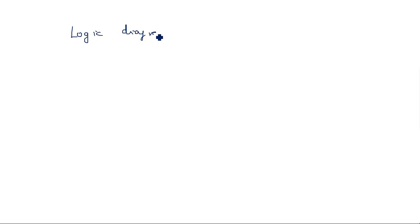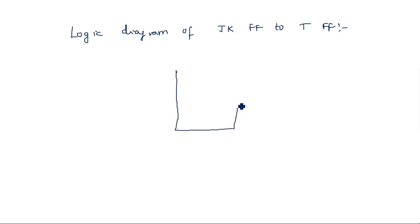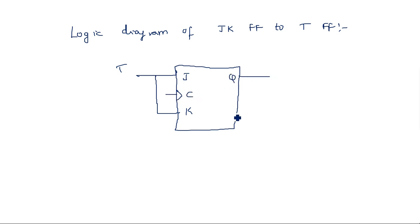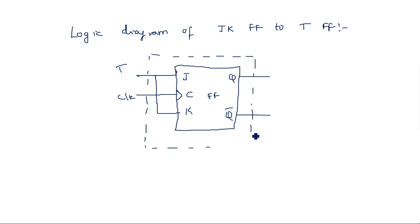The logic diagram for the JK flip-flop to T flip-flop conversion is straightforward. Internally we have the JK flip-flop with J and K operations, but externally T is the input. J and K are connected together and both driven by T, with clock input C and outputs Q and Q bar. Externally it acts like a T flip-flop.